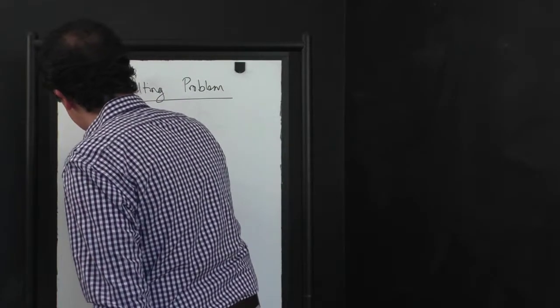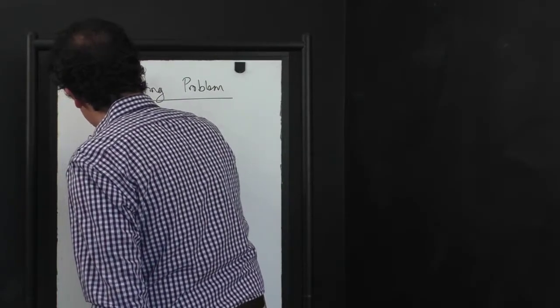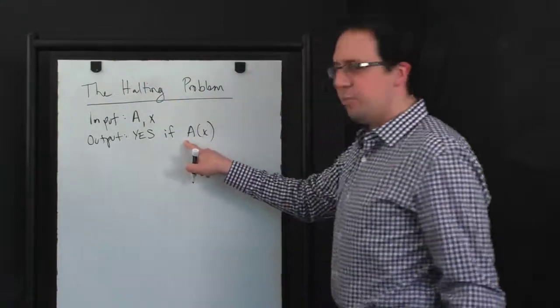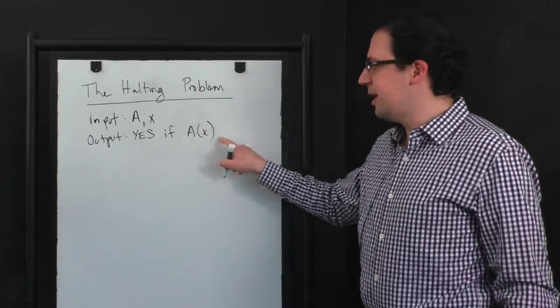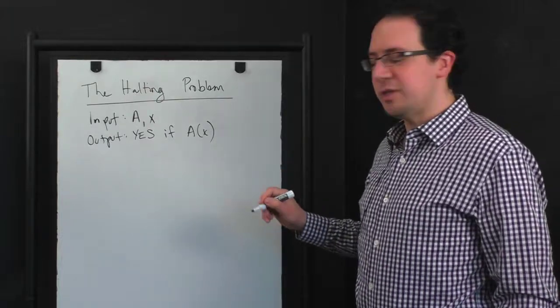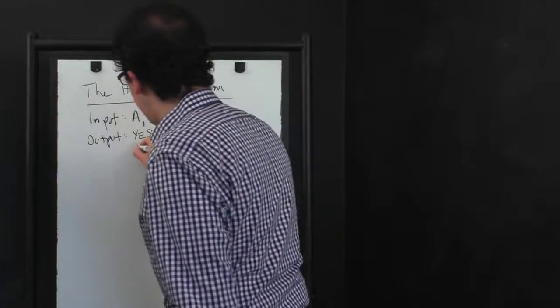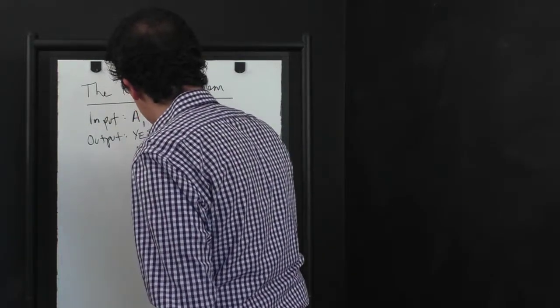And the output, the desired output, is it should say yes if when you run the program A on input X, this program eventually stops or halts and the output should be no otherwise.